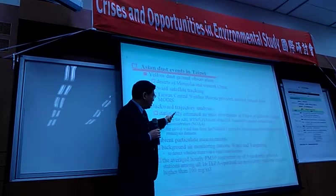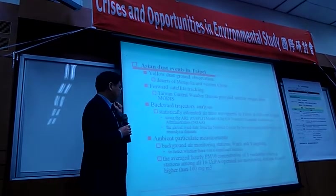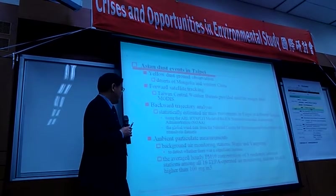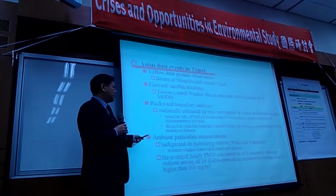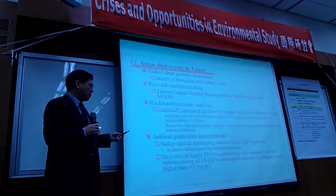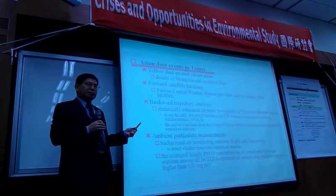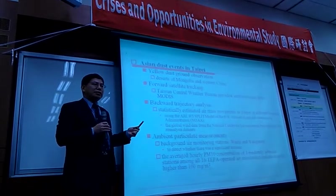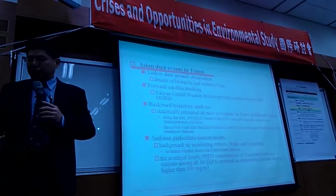We had ground-level observation data and also used forward satellite tracking to document every instance of dust storms coming from the Gobi area, and backward trajectory analysis to quantify the pathways. We used NOAA data — I needed a meteorologist to help me with that. We also had particulate matter monitoring in Taiwan, so we could quantify PM10 — particulate matter less than 10 micrometers — to quantify each event.